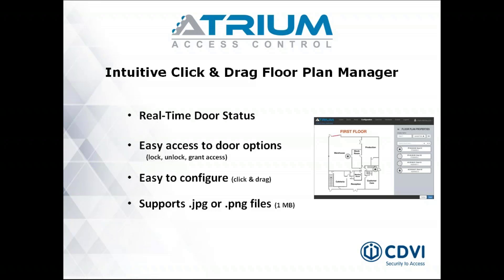You can click on the door icons to interact with that door — it's a manual operation to unlock a door, allow a visitor to come in, grant access, or unlock a door for a certain number of hours. When you're done, you re-lock the door: lock, unlock, grant access, return to normal status. To set it up, simply import the floor plan, and on the right-hand side of the screen you'll see the doors in your system. Click and drag the door icon onto the floor plan in the correct position, save, and you're ready to go.